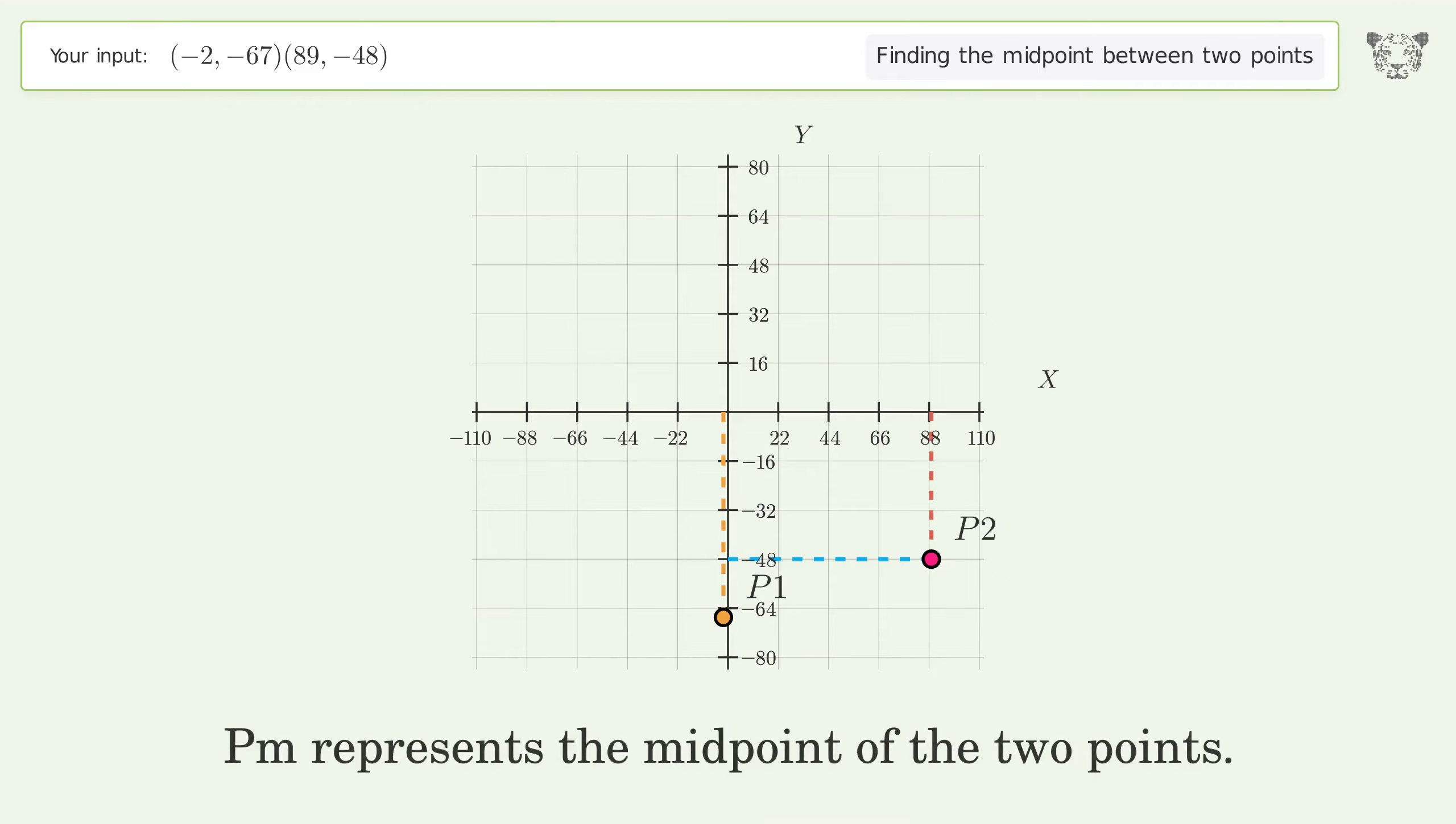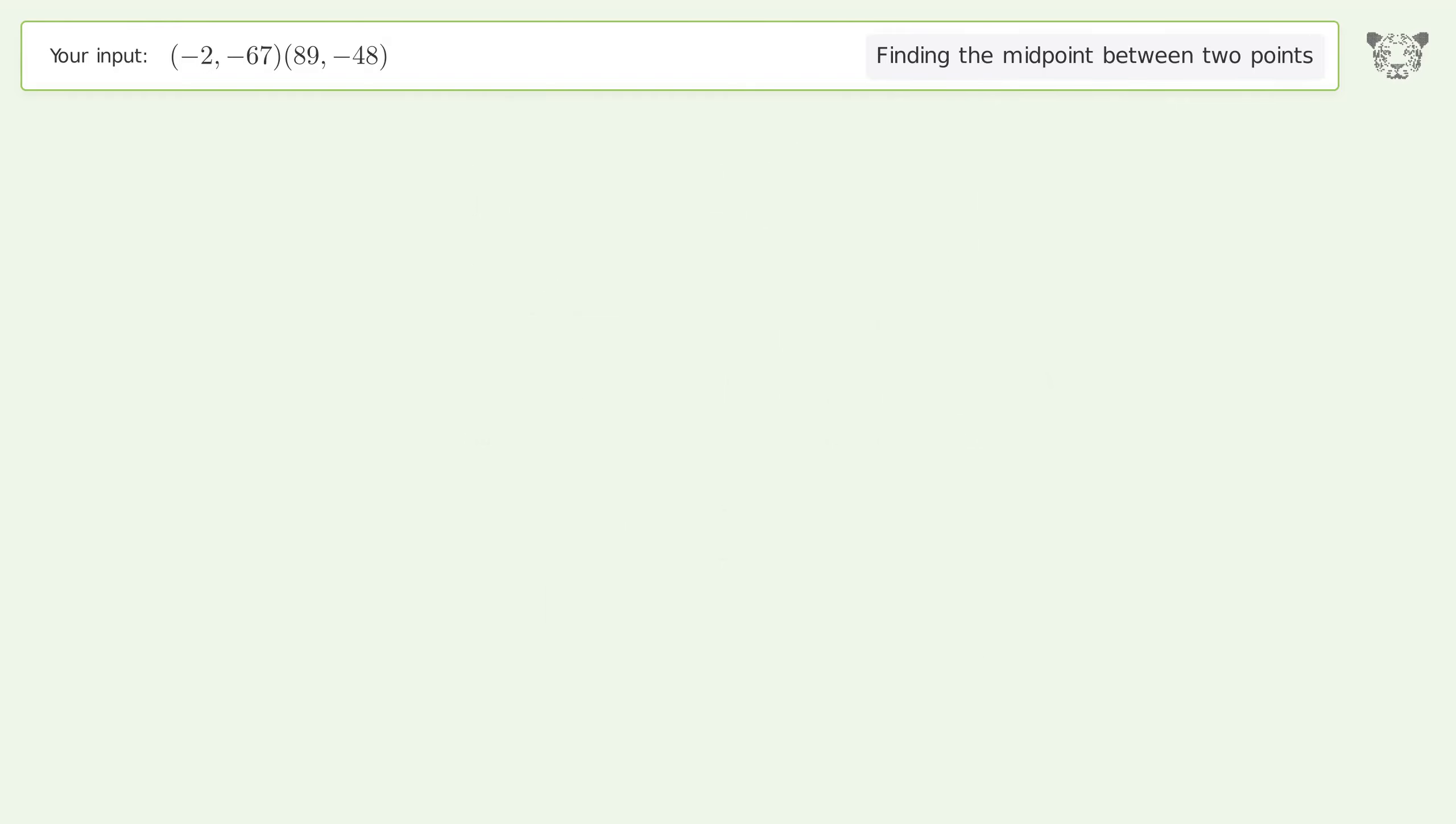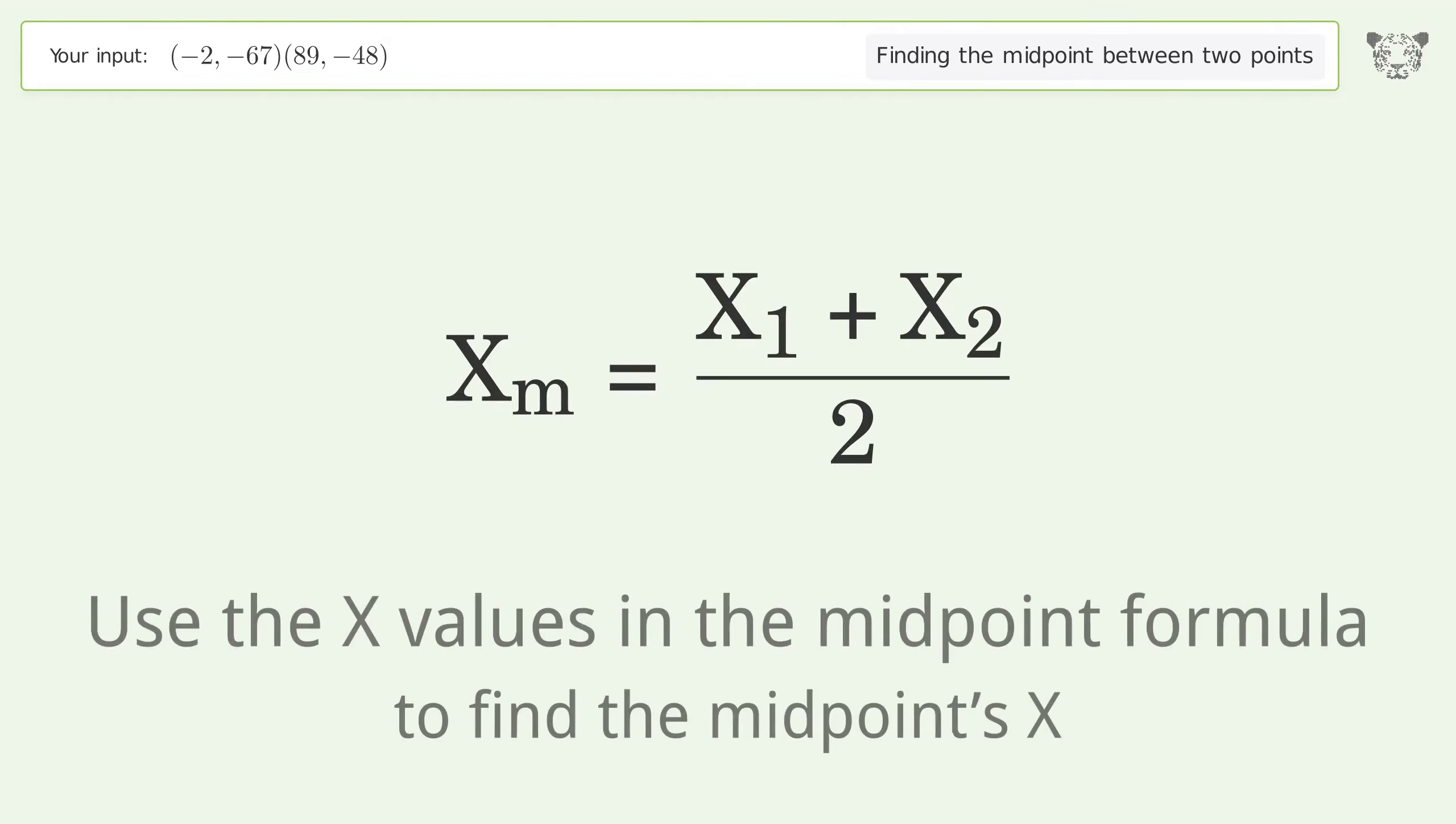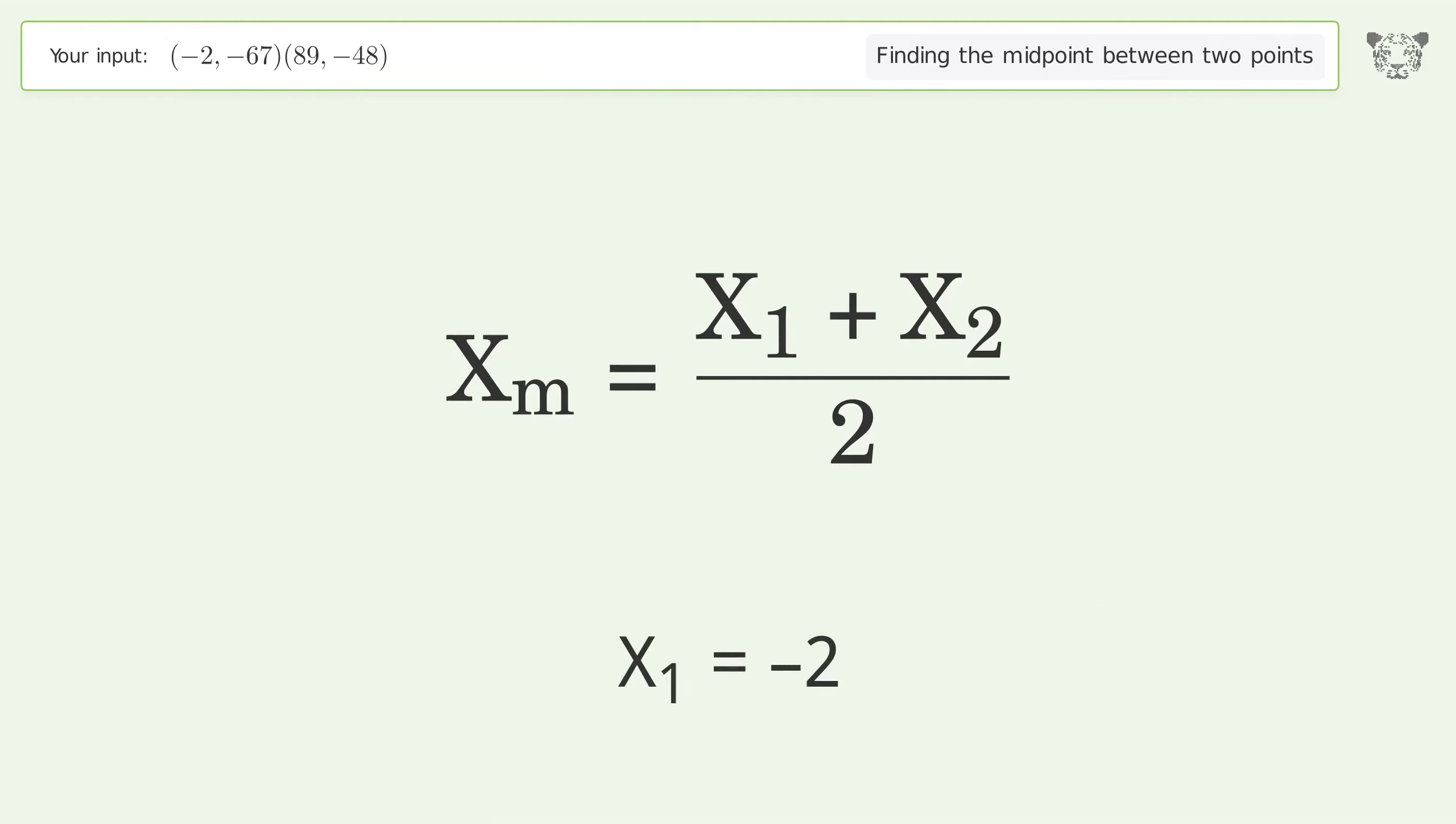Pm represents the midpoint of the two points. Use the x values in the midpoint formula to find the midpoint x-coordinate. x₁ = -2.